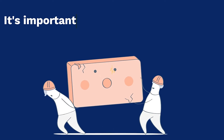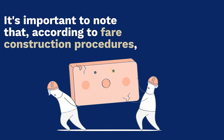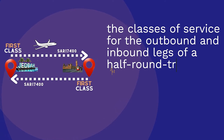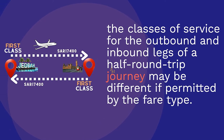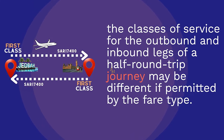It's important to note that, according to fare construction procedures, the classes of service for the outbound and inbound legs of a half-round-trip journey may be different if permitted by the fare type.